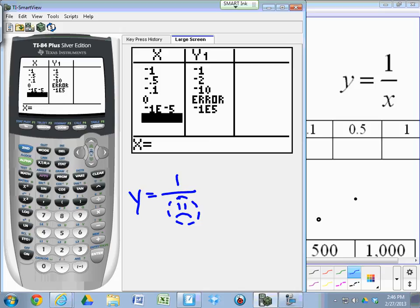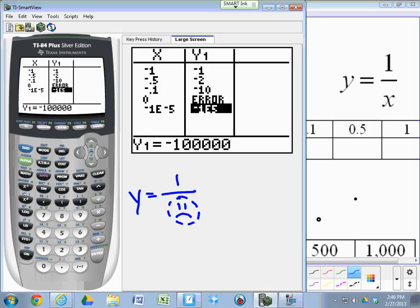It gives you negative 1E5. That's negative 100,000. Did you know that if you put the cursor on the item, it'll tell you what it equals down there? Now you do.